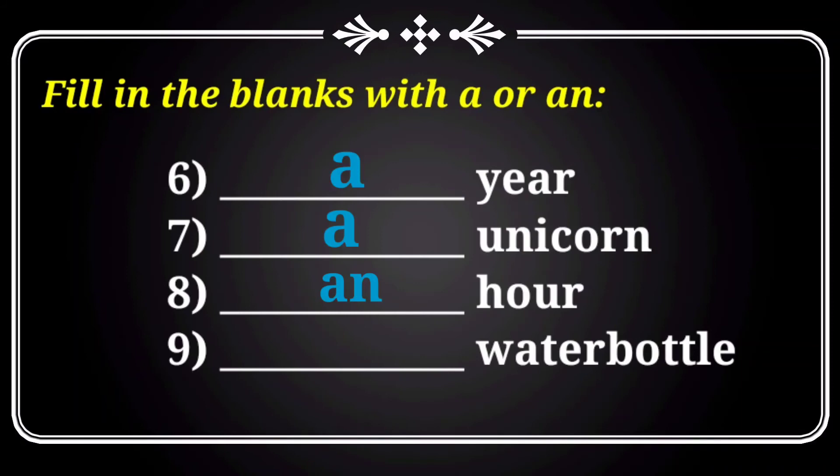Look at the ninth one: blank — water bottle. The word begins with a consonant sound, so you have to use 'a'. It changes into 'a water bottle'.